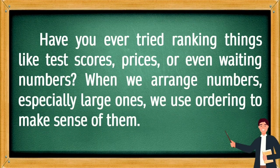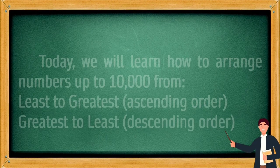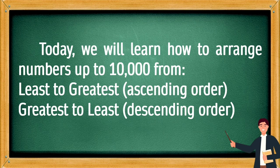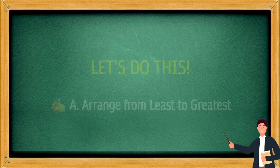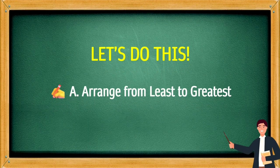Have you ever tried ranking things like test scores, prices, or even waiting numbers? When we arrange numbers, especially large ones, we use ordering to make sense of them. Today we will learn how to arrange numbers up to 10,000, from least to greatest — ascending order — and greatest to least — descending order.